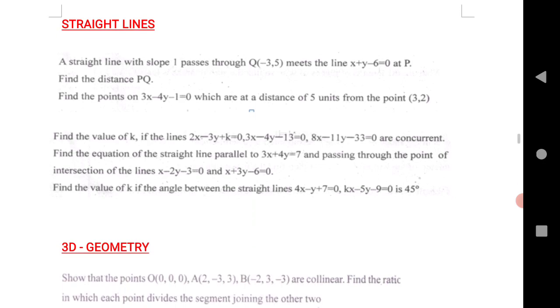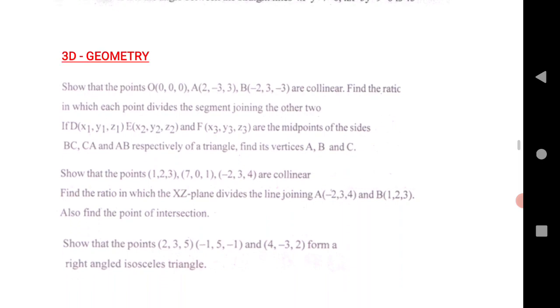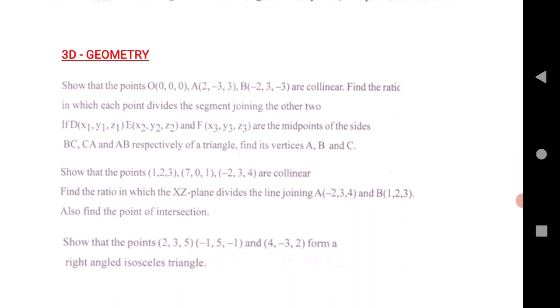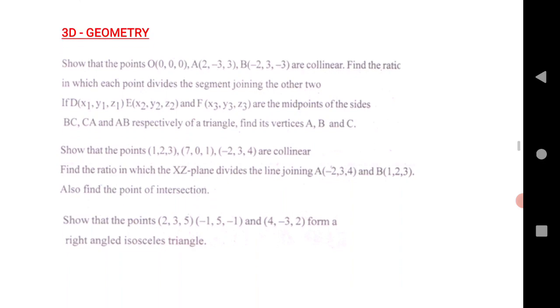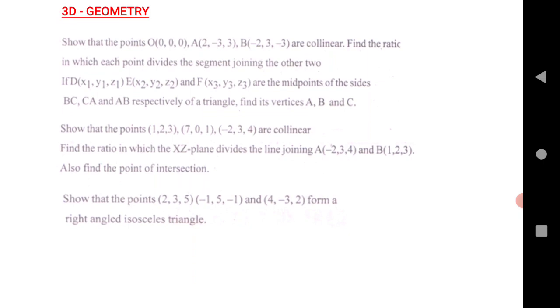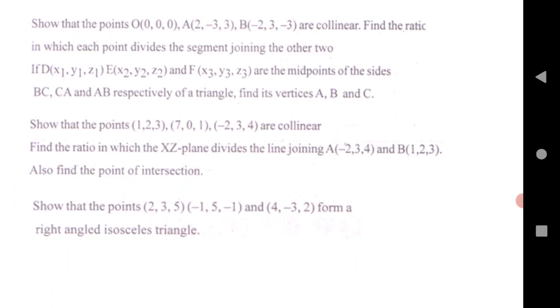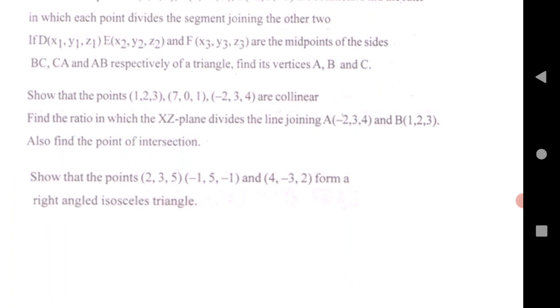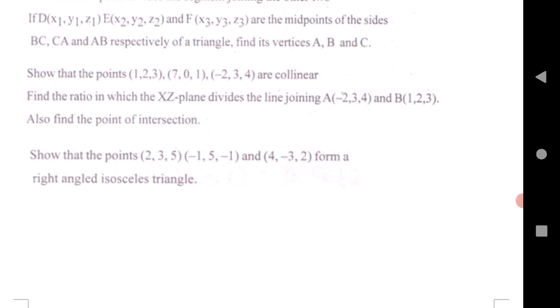Next is 3D Geometry. This is not for TS students, this is only for AP students, because 3D geometry is two marks for AP students. You can follow the blueprint in the description. Questions include: show that the points are collinear, find the ratio in which each line divides segment of the other two. If D, E, F are the midpoints of the sides of the triangle, find the vertices of ABC. Show that the points form a right angled isosceles triangle.